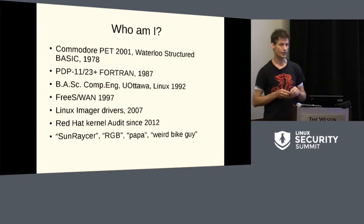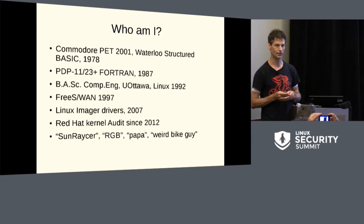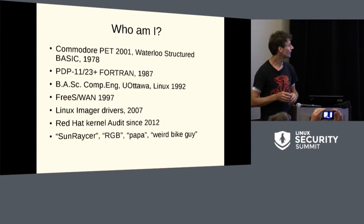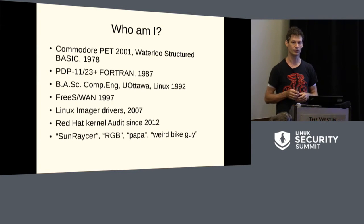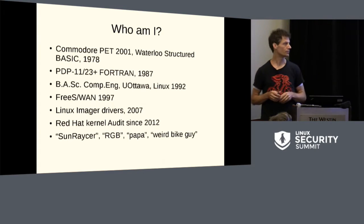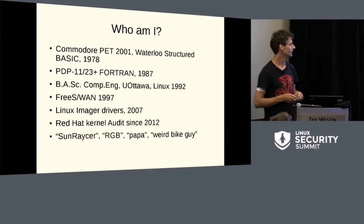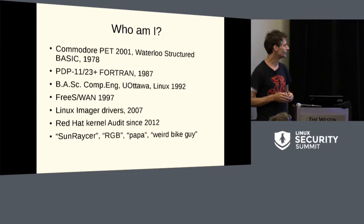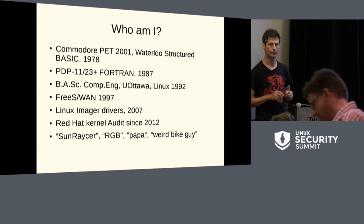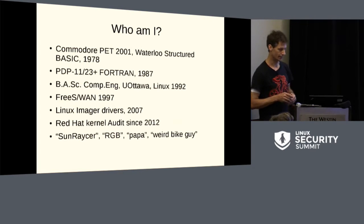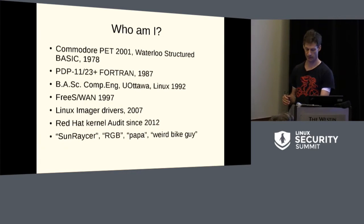A bit of history. I started hacking on computers back in the late 70s and there's been a steady progression ever since — exposure to PDP-11/23, started doing some real programming, then got some schooling. The education came later. As James mentioned, worked on FreeSwan, then worked on some imager drivers for security cameras, and I've been working with Red Hat for three and a half years. I'm known as Sunracer from solar car racing and RGB on IRC, and more recently as a diplomatic dependent, which explains why I might yawn — I'm still somewhere over the Atlantic in terms of jet lag.